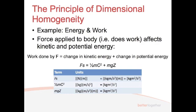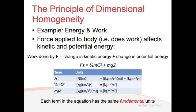So this equation follows the principle of dimensional homogeneity. On one side of the equation, F·S, we've got the units of kilograms metres squared per second squared. And on the other side, both of those terms also have the same units as the work done. Each term in the equation has the same fundamental units.